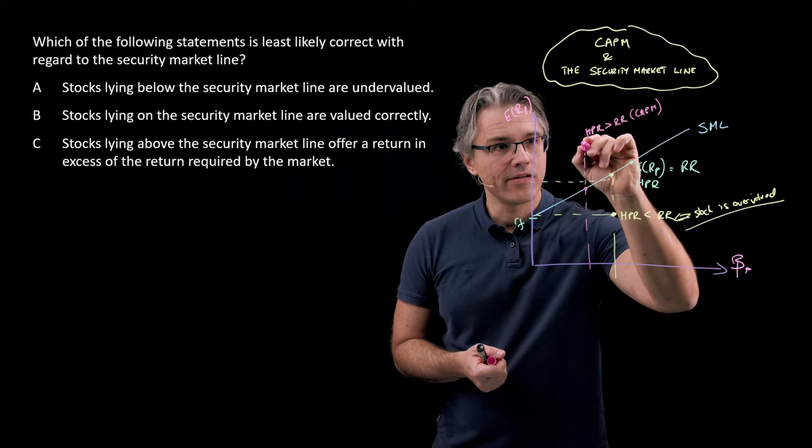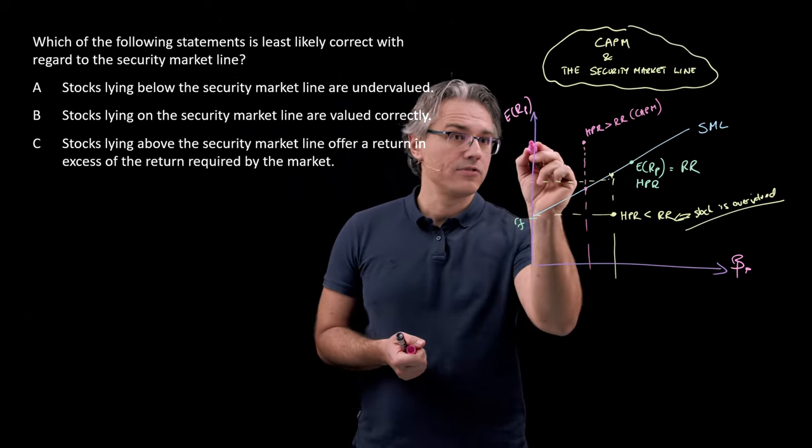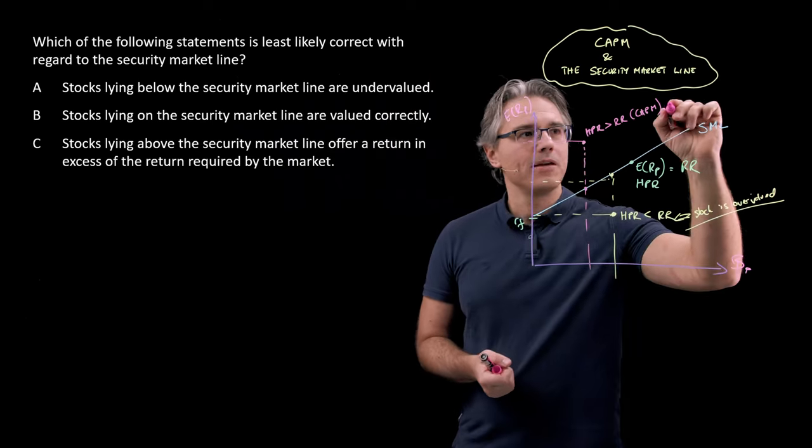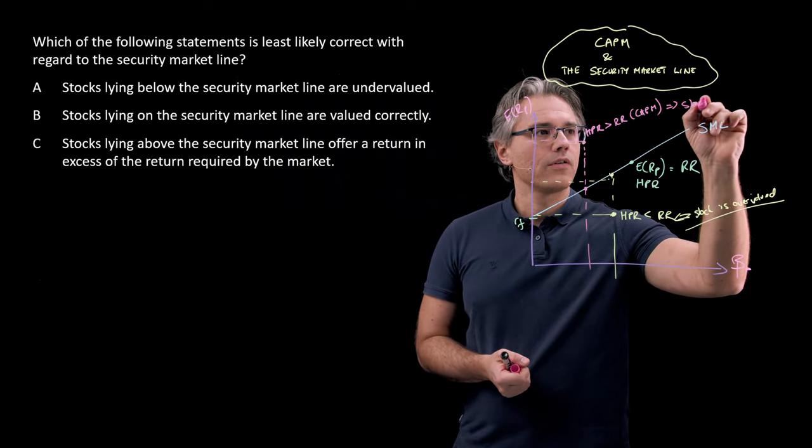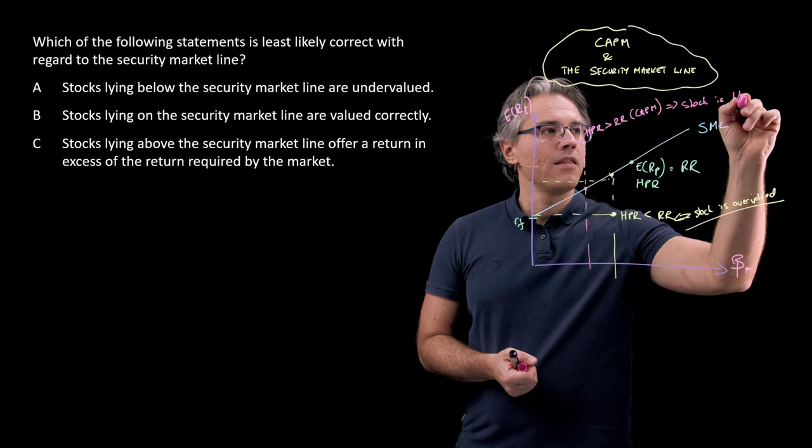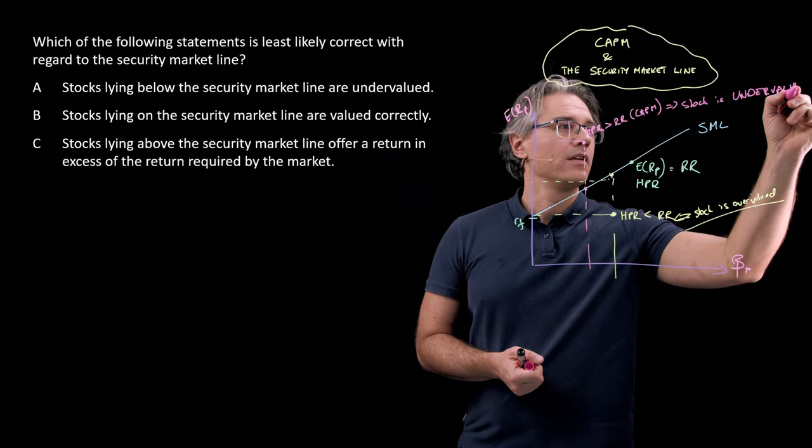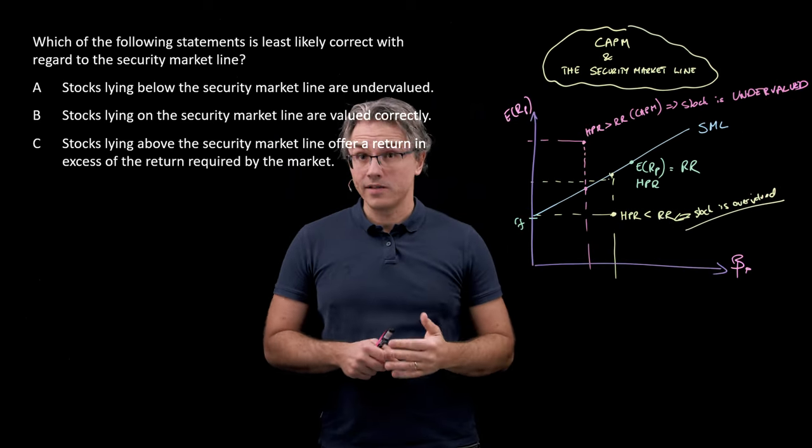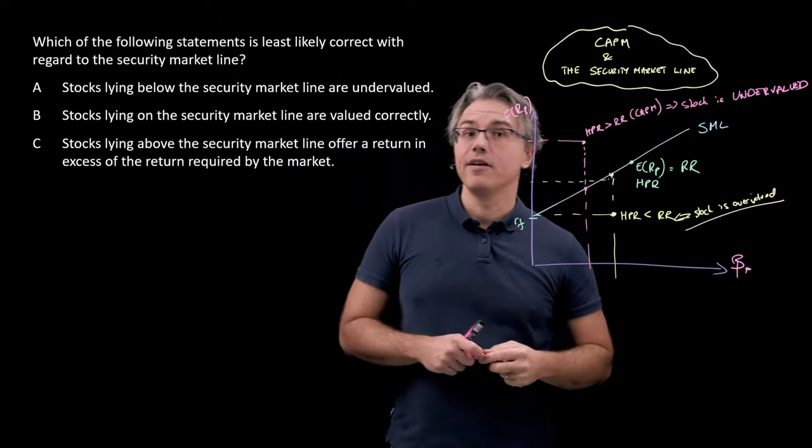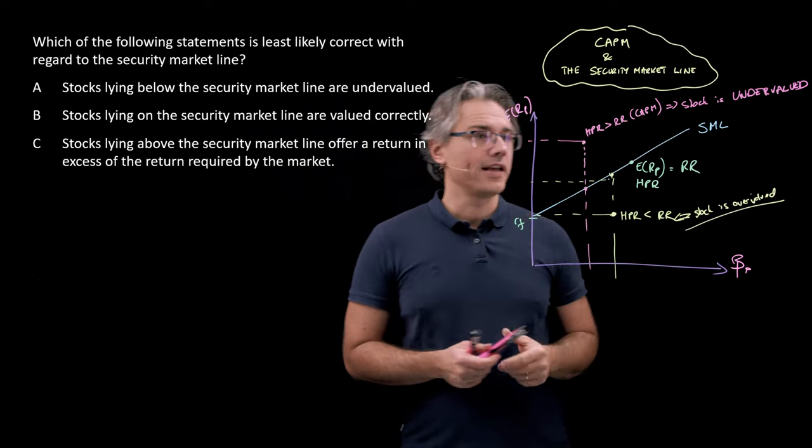You know, this is the RR, whereas this stock is expected to produce significantly more. Why? Because the stock is undervalued. That's the driver for it generating us expecting it to generate higher returns than those predicted by the CAPM model.